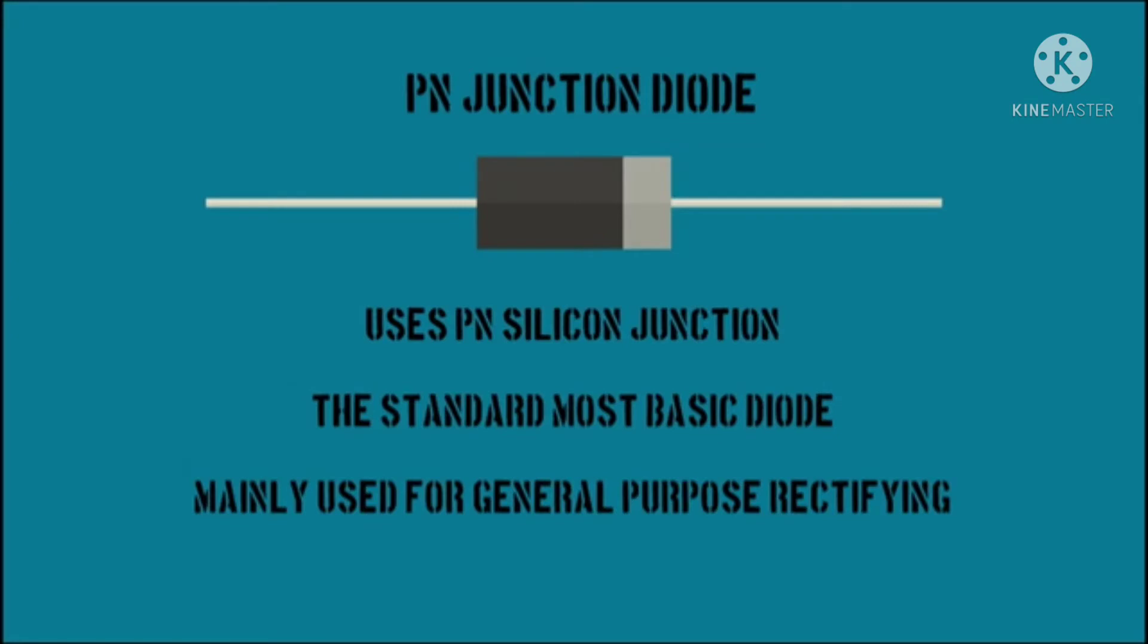Some common types of diodes include the following. PN junction diode. This diode is thought of as the standard general purpose diode. It uses a PN silicon junction to control the direction of current flow. It is mainly used for general purpose rectifying.